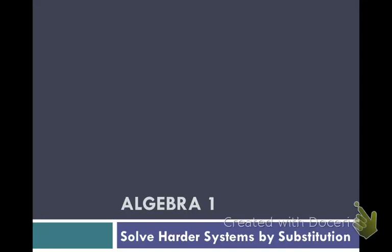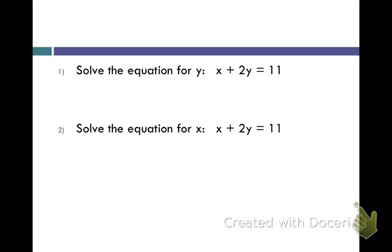Okay, on the last video, you solved systems of equations where one equation was already solved for a variable. What we're going to do today is look at systems that may not be solved for a variable. So before we do that, let's take a look at this equation, x plus 2y equals 11.